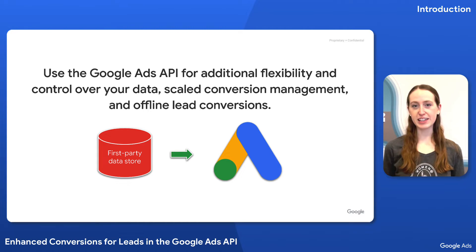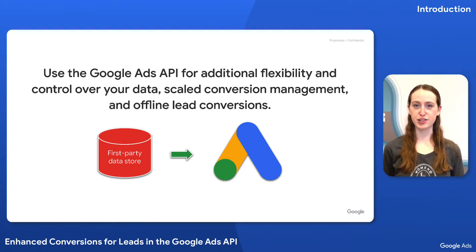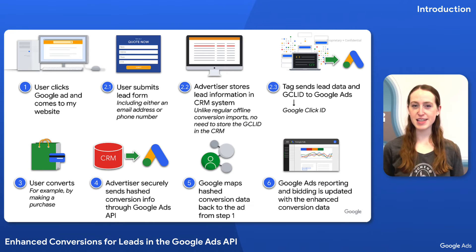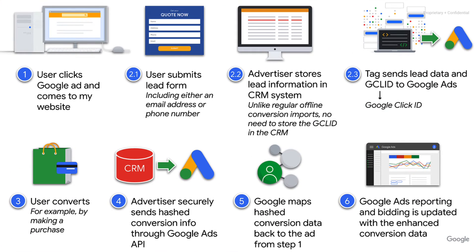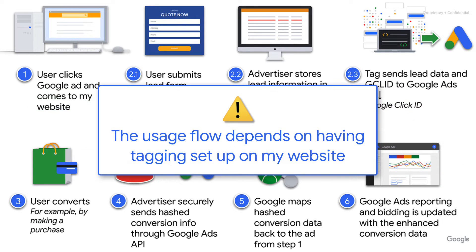For example, if your lead converts in a physical store and you track that conversion in your CRM, you can upload that lead conversion information through the API. Let's see how this happens in practice. Let's say I operate an online store and I run Google Ads to drive leads. I've set up a tag on my website that securely sends data to Google Ads whenever someone converts or submits a lead form on my website.